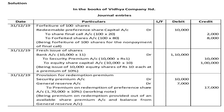Journal Entry 1 — forfeiture: Preference Share Capital account debited; to Share Final Call account (100 shares × 20 rupees = 2,000 rupees); to Forfeited Shares account (100 × 80 rupees = 8,000 rupees). Total preference share capital forfeited: 10,000 rupees. Being forfeiture of 100 shares for non-payment of final call.